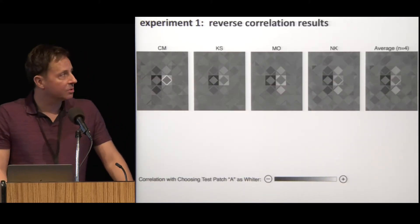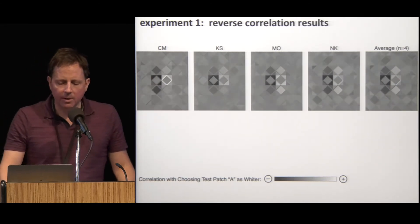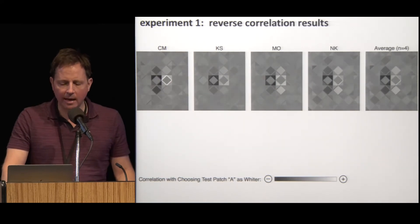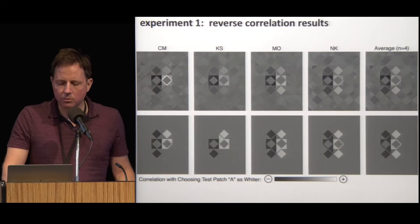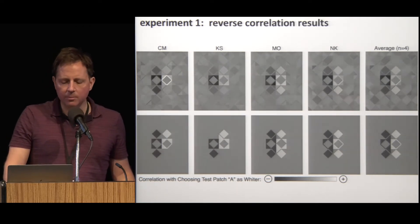Here are the correlation maps, which we sometimes call the classification images. The first four classification images are from individual observers, and the fifth is the average across all observers. Each image patch shows the correlation between the luminance fluctuations at that location in the stimulus and the observer choosing test diamond A as appearing brighter. Positive correlations are white, and negative correlations are black. The top row shows the raw correlations, and the bottom row shows a threshold inversion that indicates which correlations are statistically significant. These images reveal several interesting facts about how people perceive lightness. First, the effects are highly local. Only image regions that are very close to the test diamonds have any influence on observers' responses, and as we'll see later, this actually poses a problem for some computational models.